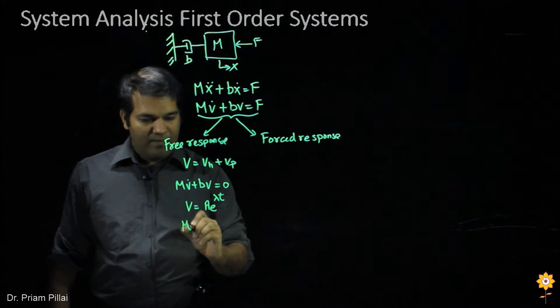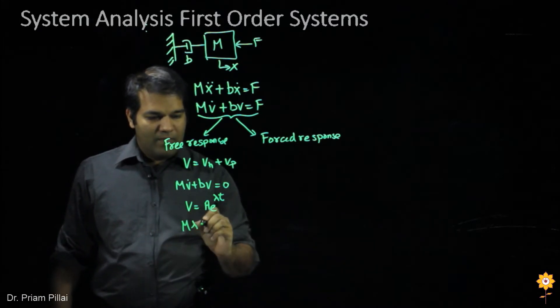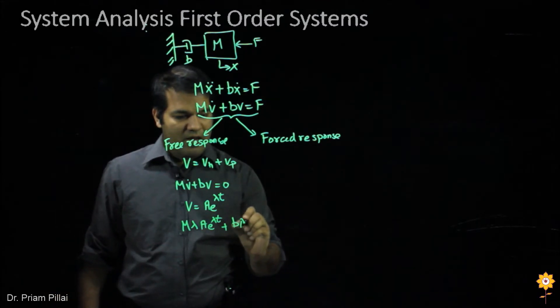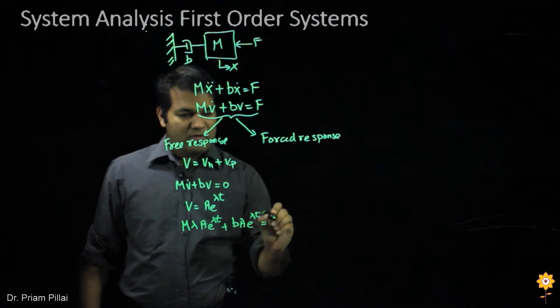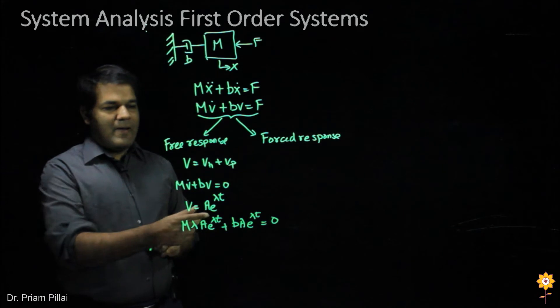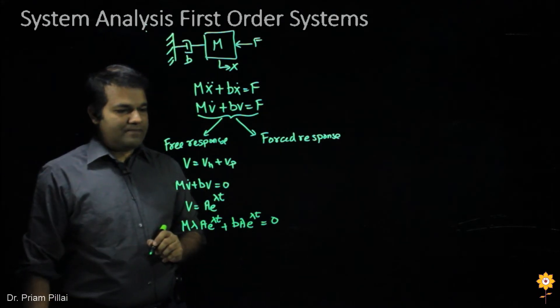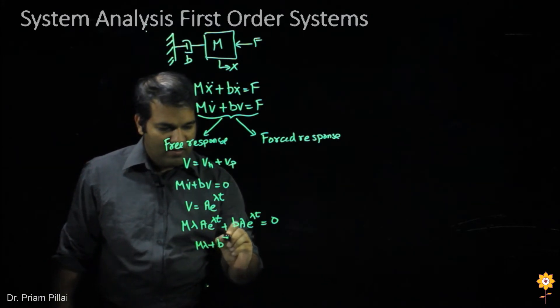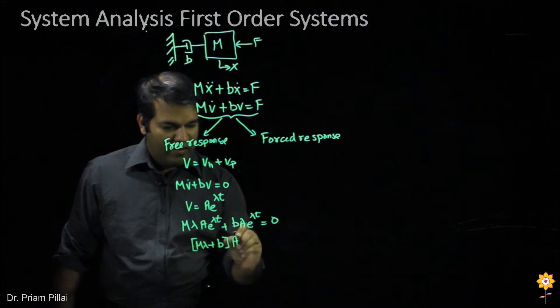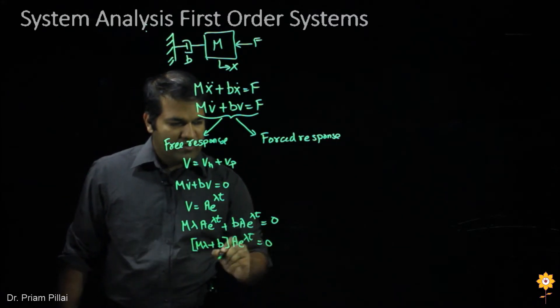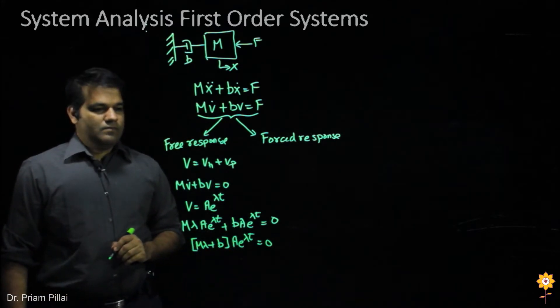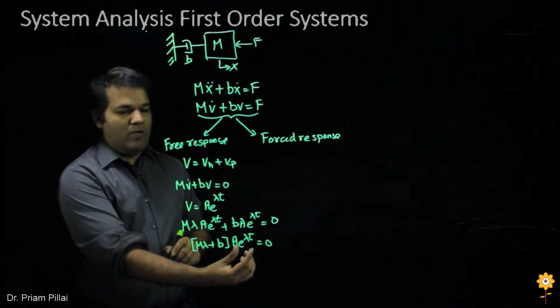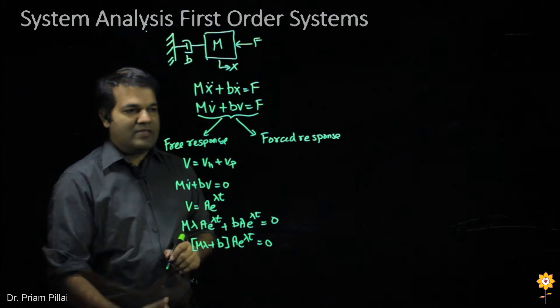And so what do we end up getting? That m lambda ae to the lambda t plus b ae to the lambda t equals 0, where lambda is the coefficient of the exponential. And we can rearrange this: m lambda plus b, the whole multiplied by ae to the lambda t would equal 0. This is a very important function. This polynomial in front of our ae to the lambda t is called a characteristic equation.